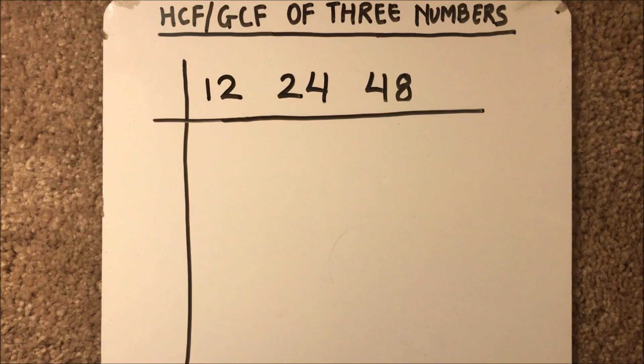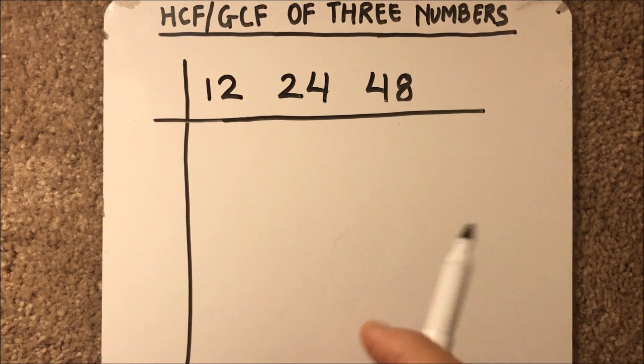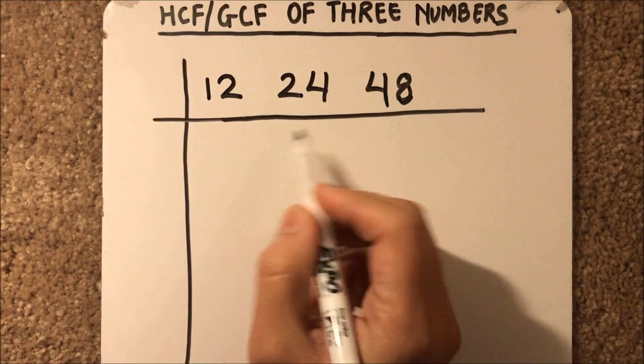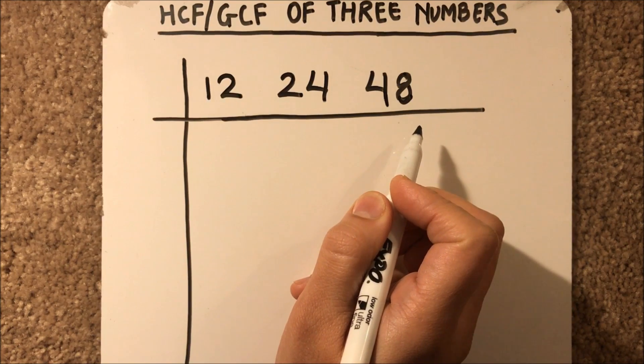So let's begin with three numbers. Let's have numbers 12, 24, and 48 and we need to find the GCF of these three numbers. So what we'll do, we'll write the numbers like this and begin dividing the numbers with the minimum common divisor.